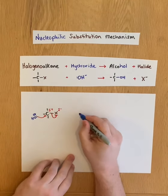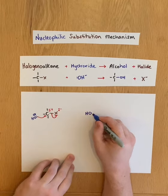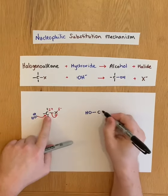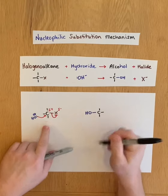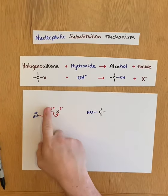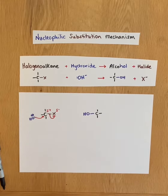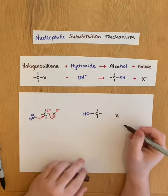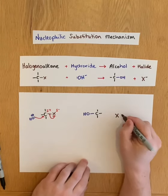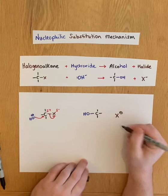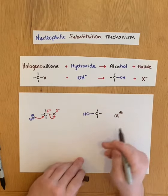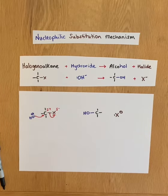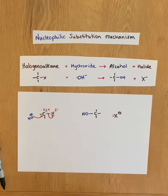Following those arrows through, you then have your hydroxide now bonded to the carbon. Whatever those other three things were here, here, and here will still be bonded to that carbon. And the halogen has been kicked out, booted out from the halogenoalkane as a halide ion. You can draw the lone pair on there if you wish to show that those are the two electrons that have been transferred onto this halide ion.